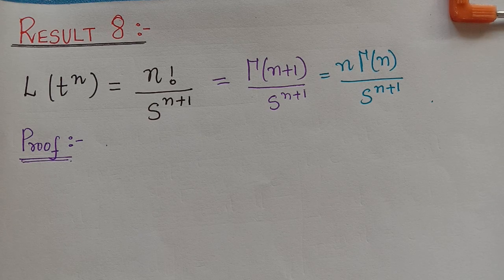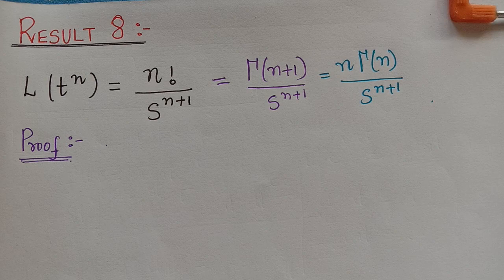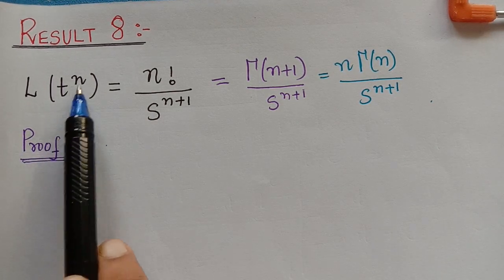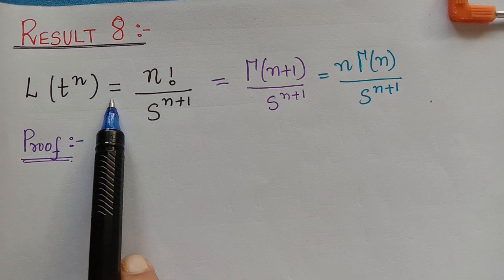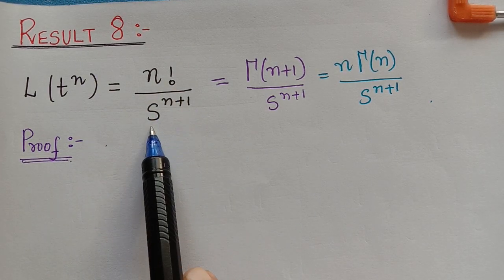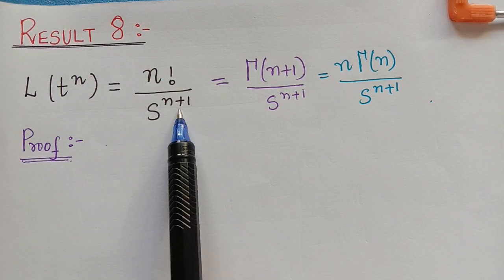Dear students, under the topic Laplace transform, here we have result 8. We have already seen results from 1 to 7 in our previous video lectures. Now result 8 states that the Laplace transform of t to the power n is equal to n factorial divided by s to the power n plus 1. This is the standard result.